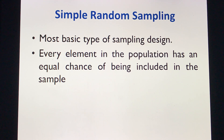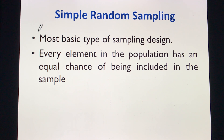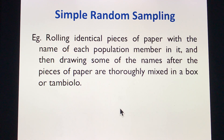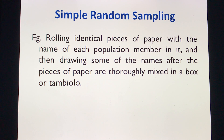In simple random sampling, this is the most basic type of sampling design. Every element in the population has an equal chance of being included in the sample. An example would be rolling identical pieces of paper with the name of each population member, and then drawing some names after the pieces of paper are thoroughly mixed in a box — like a raffle, or in the local dialect, a tambiolo.